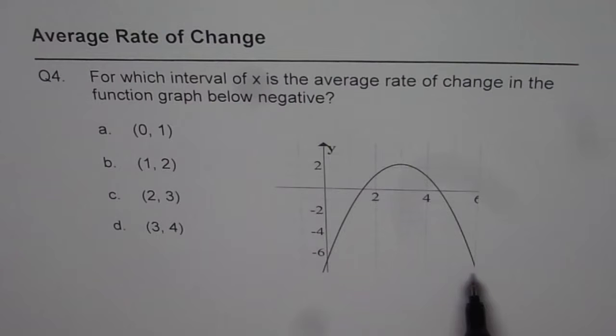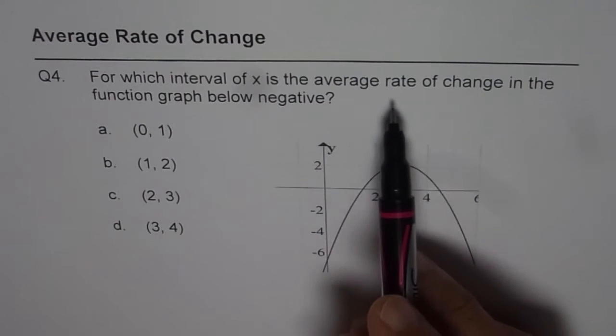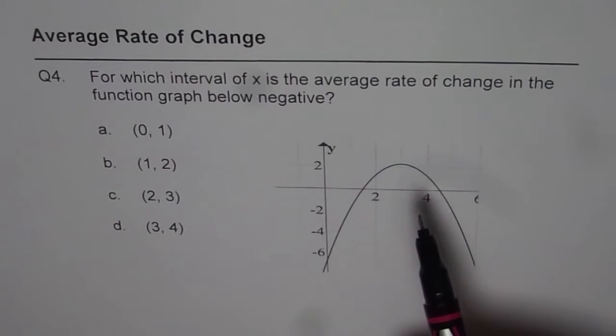I would like you to pause the video, select the best answer and then look into my answer. When we say average rate of change, we are looking for the secant line.